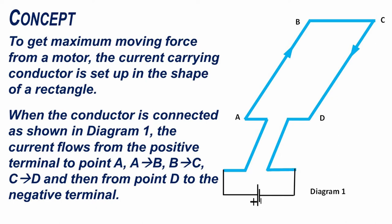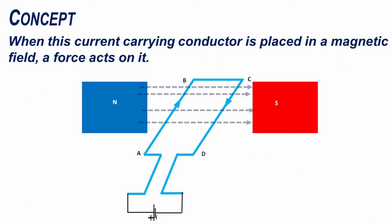To get maximum moving force from a motor, the current carrying conductor is set up in the shape of a rectangle. When the conductor is connected as shown in diagram 1, the current flows from the positive terminal to point A, A to B, B to C, C to D and then from point D to the negative terminal. When this current carrying conductor is placed in a magnetic field, a force acts on it.